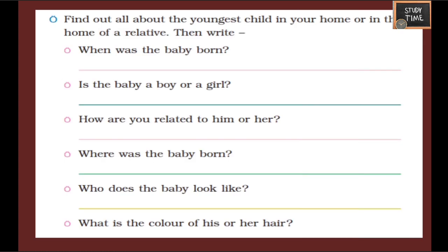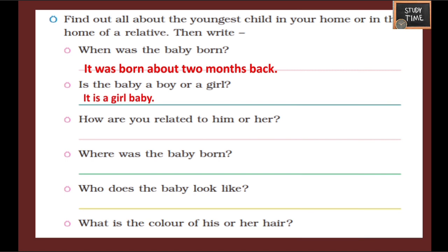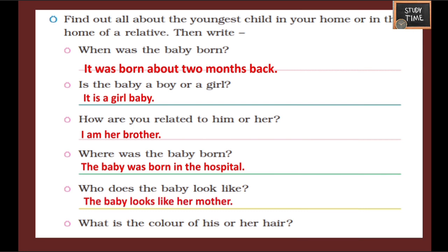Find out all about the youngest child in your home or in the home of a relative, then write. When was the baby born? You can write the month or how many months back. Is the baby a boy or a girl? Write accordingly. How are you related to him or her — brother, sister, or cousin? Where was the baby born? The baby was born in the hospital — write the place. Who does the baby look like? The baby looks like the mother, father, brother, or sister. What is the color of his or her hair? Newborn babies usually have black or brown hair.